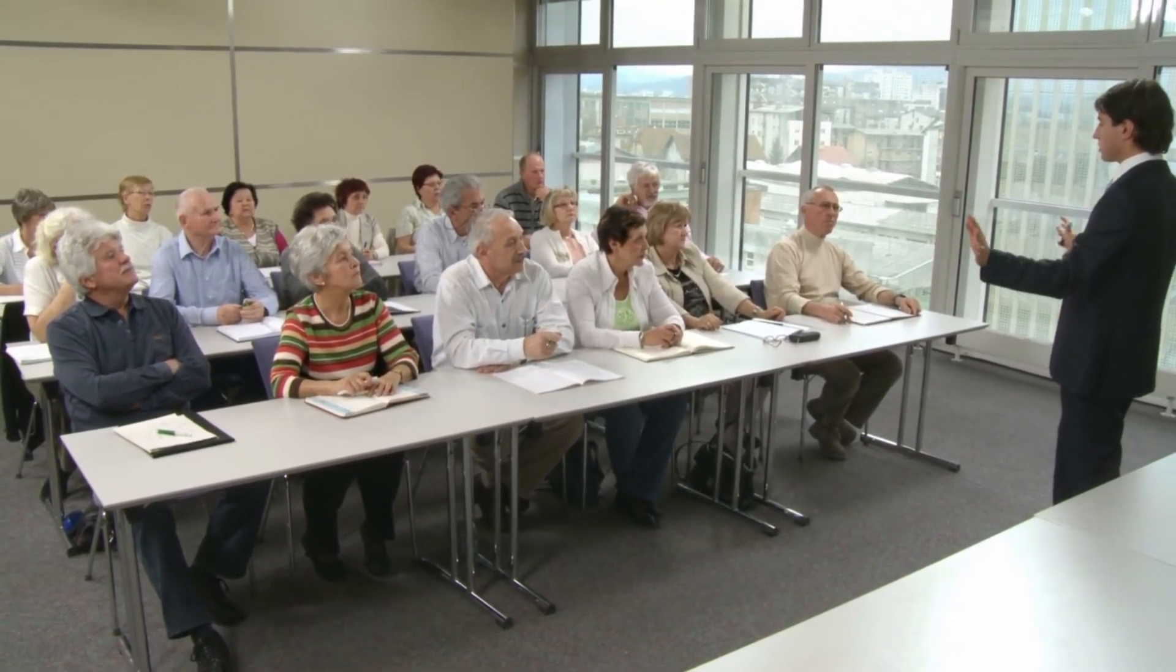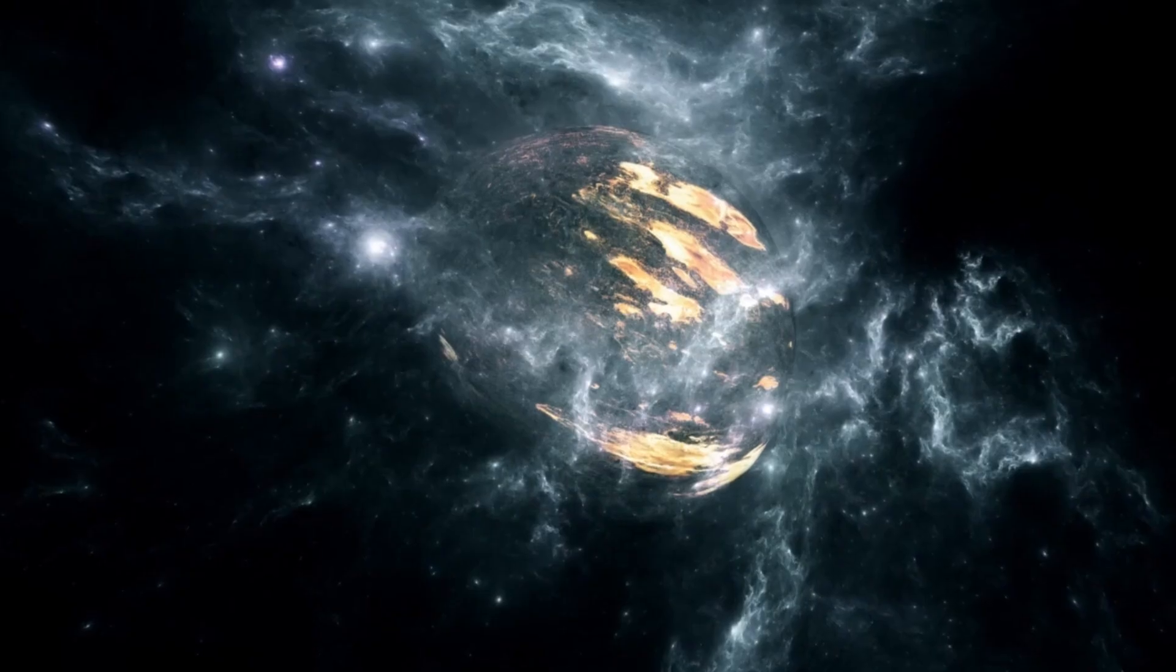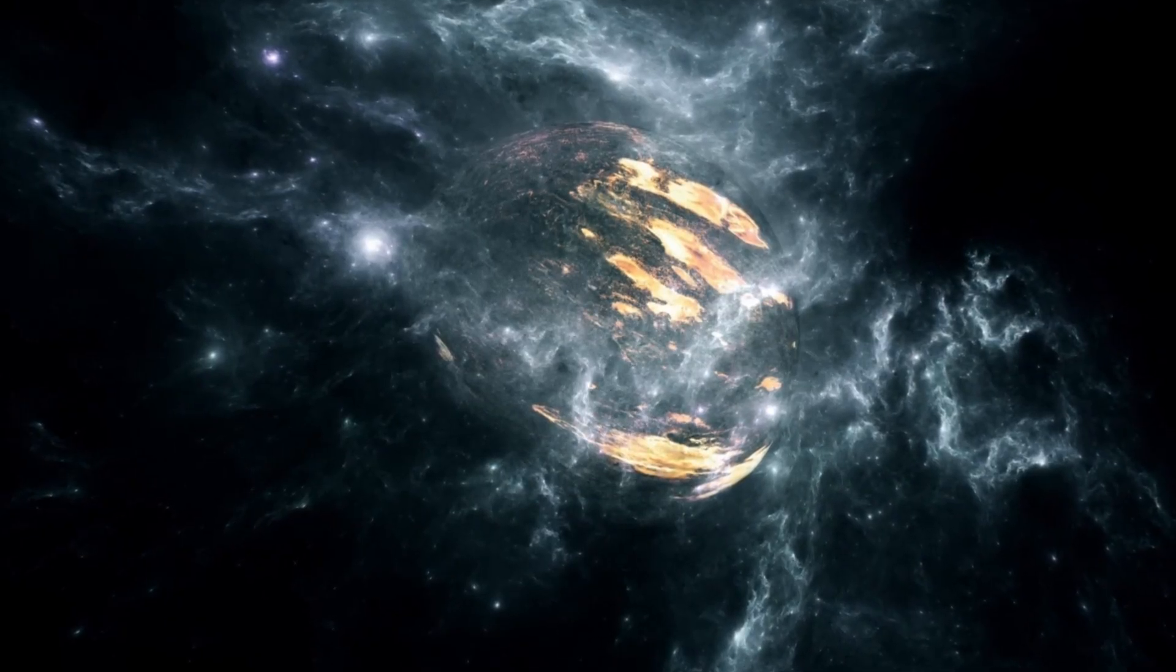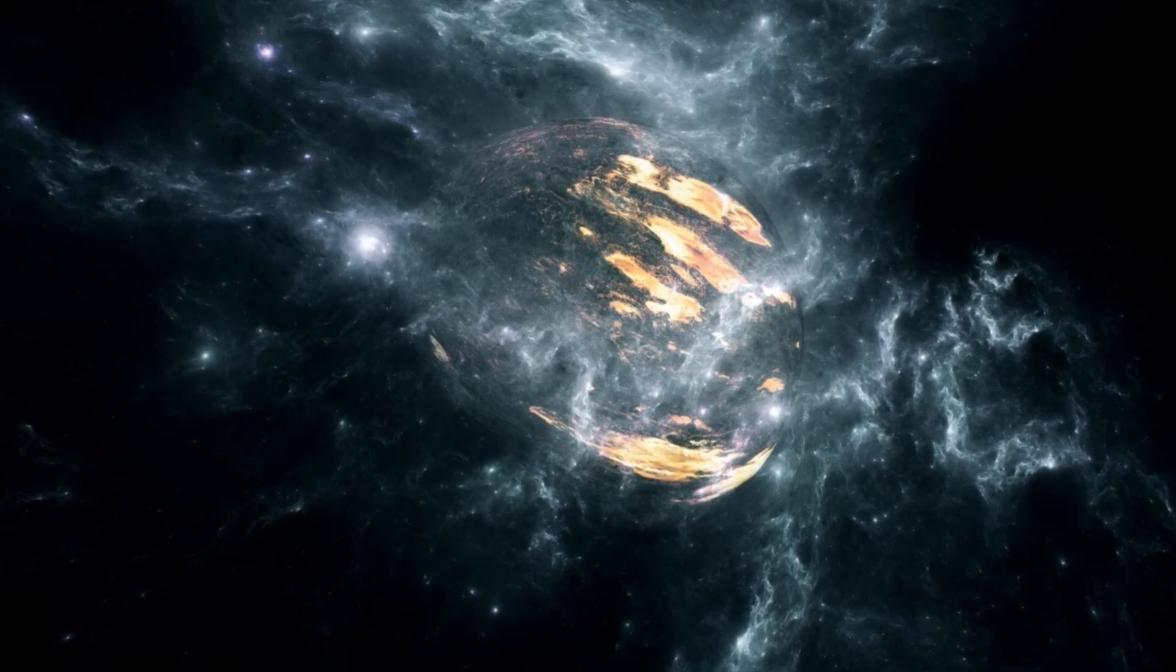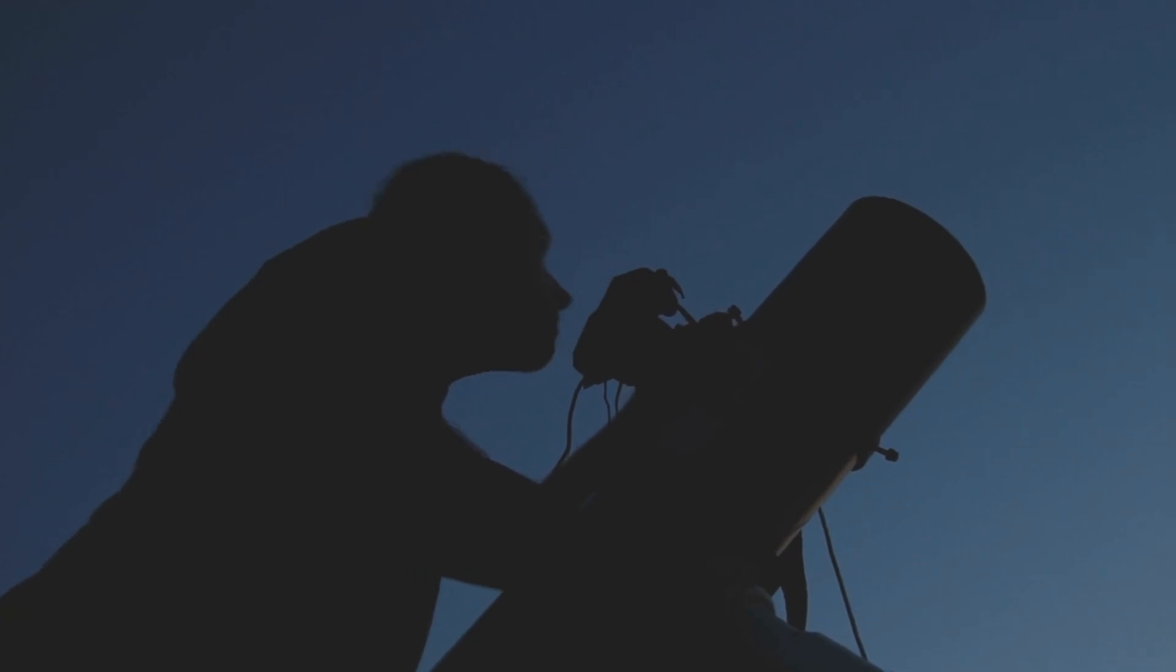With its current physical properties, it is safe to say that if the vast sphere of Betelgeuse were placed within our solar system, its surface would most likely extend far enough to displace the first four planets, including Mercury, Venus, Earth, and Mars.